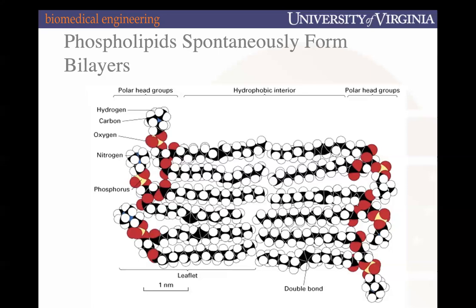To clarify: every phospholipid has phosphatidic acid — the fatty acid chain, glycerol, and phosphate group — and then the alcohol group. There are four different alcohol groups shown on the previous slide. What specific phospholipid it is exactly is defined by which alcohol is present.